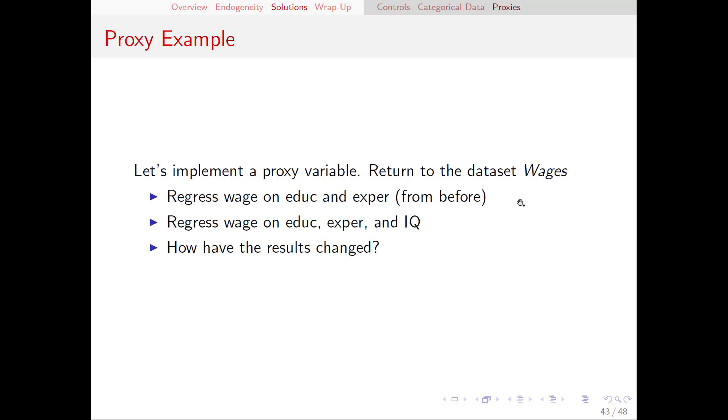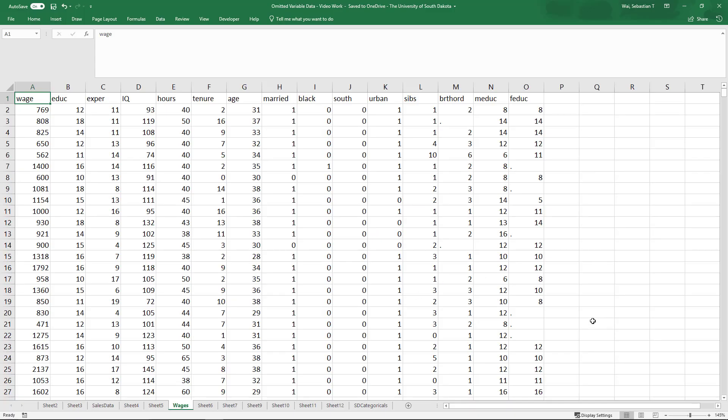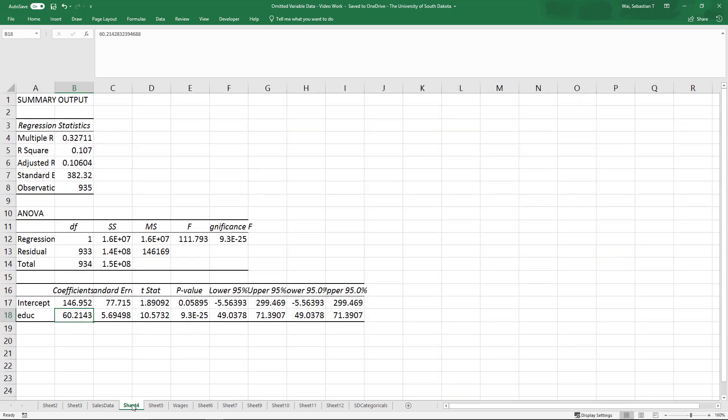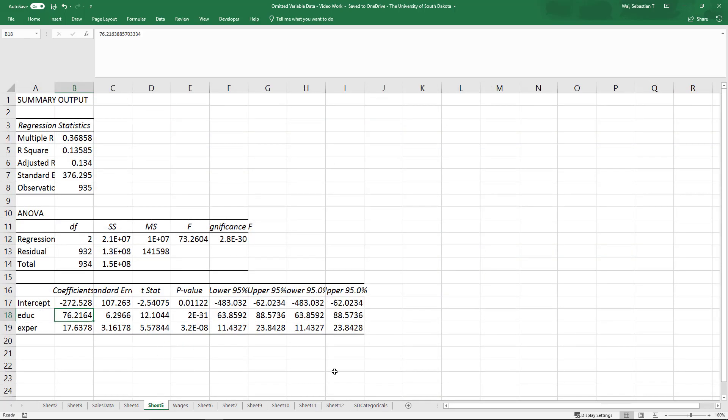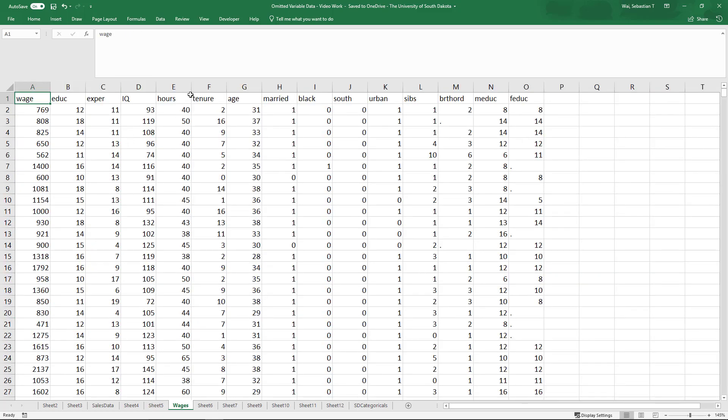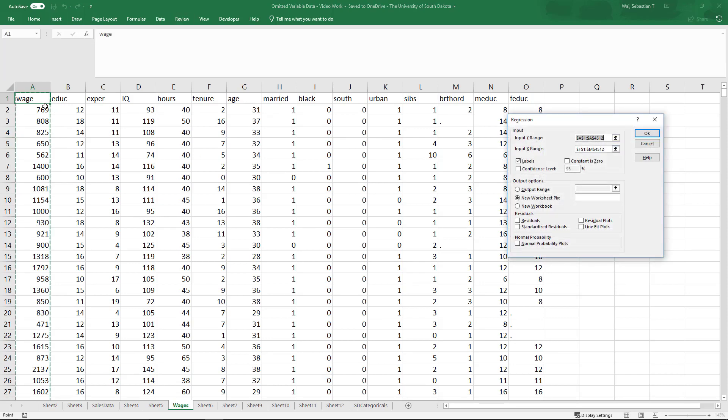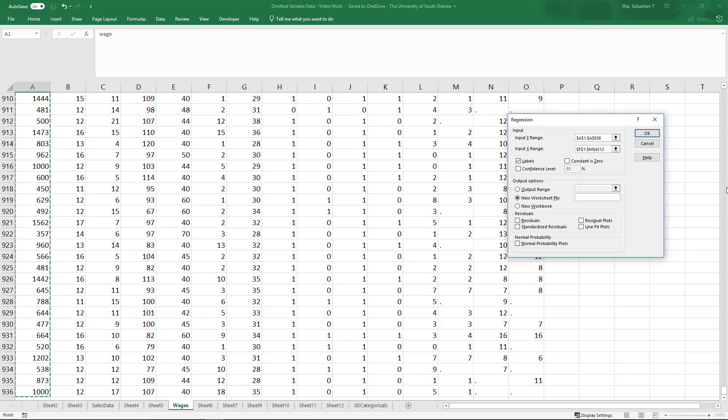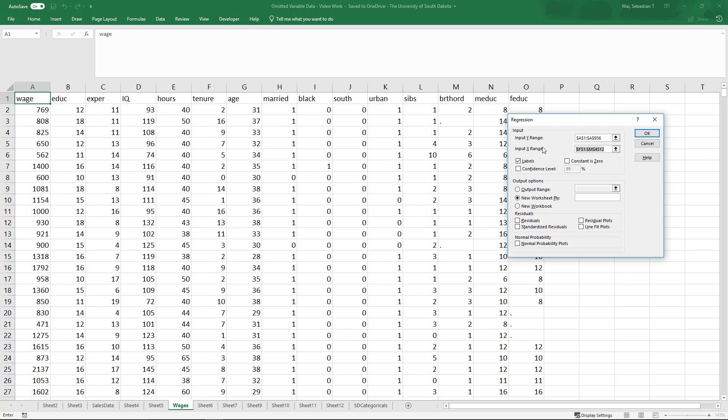Now we'll go back to our dataset wages and implement IQ as a proxy variable. Remember from the video on control variables, we ran two regressions. We ran wage on education, and then we added experience as a control. And we looked at how adding experience removes some bias from the model. But there still could be bias out there, particularly caused by the omitted variable of ability. So we're going to take that model, and we're going to add IQ into that. For the dependent variable, I will select wage. For the explanatory variables, I will select education, experience, and IQ.